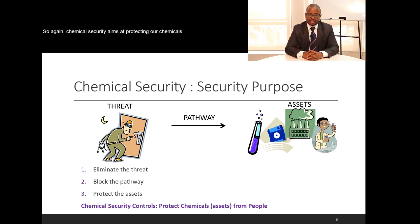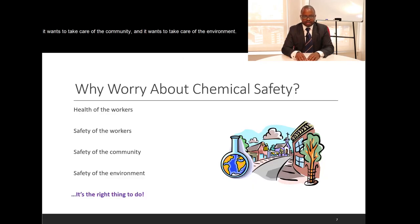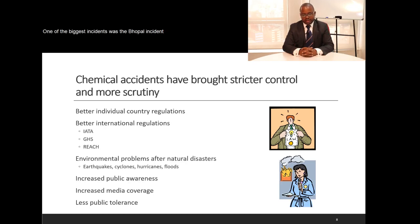Chemical security aims at protecting our chemicals from being accessed by individuals who might have ulterior motives. Chemical safety broadly wants to take care of workers, the community, and the environment. Chemical safety is the right thing to do, and chemical accidents have inevitably resulted in stricter control and more scrutiny. One of the biggest incidents was the Bhopal incident that occurred in India.